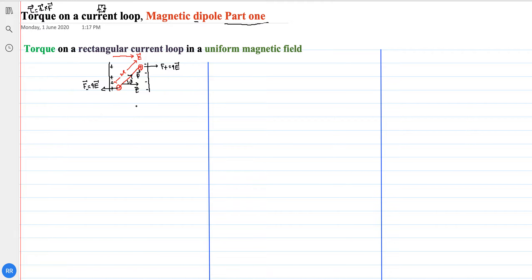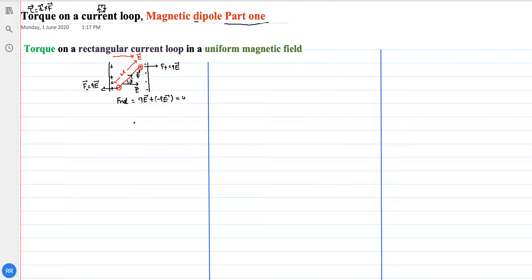The net force on this electric dipole in the electric field is equal to qE plus (−q)E, which equals zero. This is what we have previously studied.